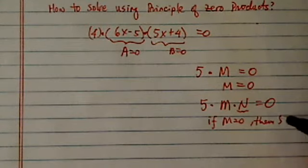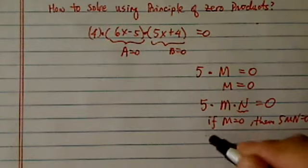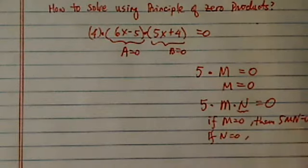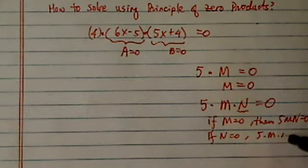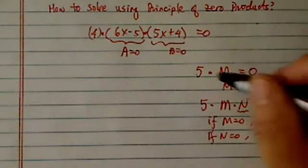then the whole thing equals zero, right? Five M N equals zero. And if N equals zero, irregardless of what M is, then five times M times N equals zero. That's all that's saying, Principle of Zero Products.